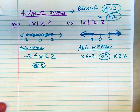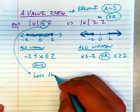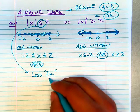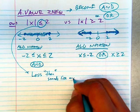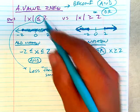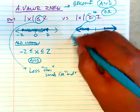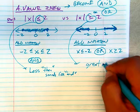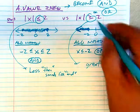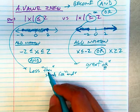Absolute value inequalities become one of two things: an and or an or statement. Here's how to remember which: when you read the less-than symbol, you say 'less than,' and the word 'than' sounds like 'and' — so less than becomes an and statement. For the greater-than symbol, remember 'greater' contains the word 'or' — so greater than becomes an or statement.